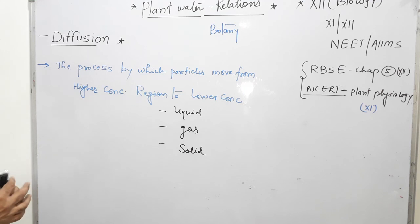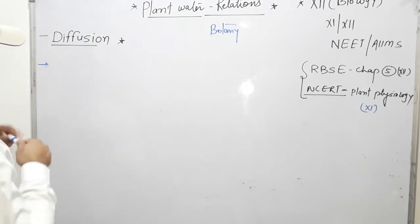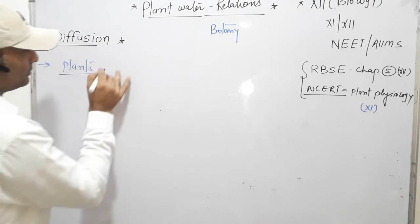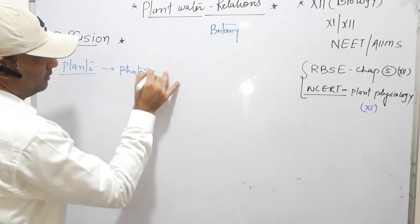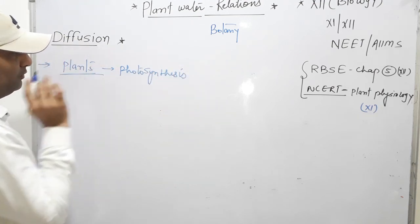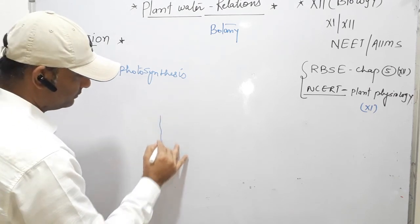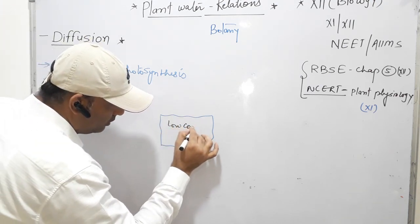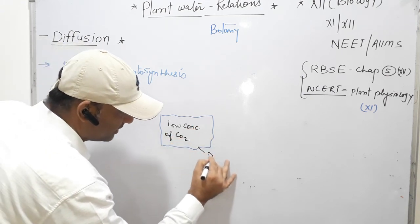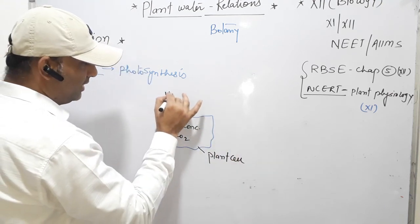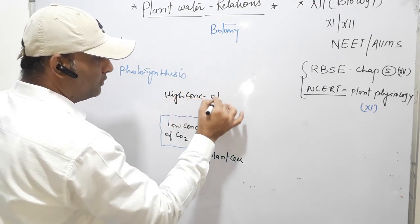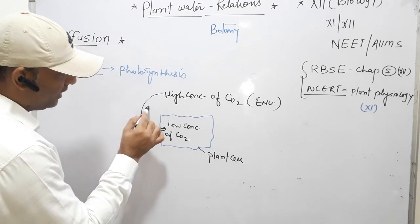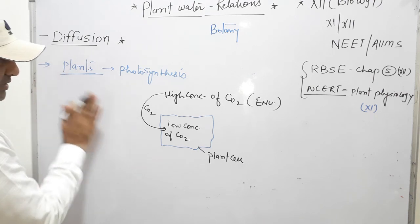Now, the process of diffusion — we can take examples in plants. First, photosynthesis: the plant cell requires carbon dioxide, so there is a low concentration of CO2 inside the plant cell. In the environment there is high concentration of CO2, so CO2 moves from higher concentration region to lower concentration region, entering the plant cell by the process of diffusion.